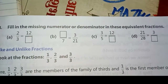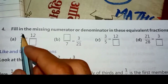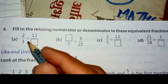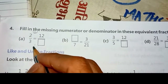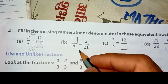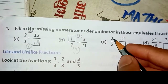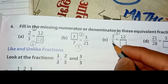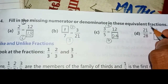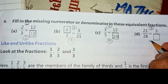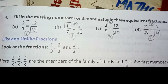Question 4: Fill in the missing number — numerator or denominator — in these equivalent fractions. Since they are stated to be equivalent, we find the multiplication or division factor and apply it. For example, if 2 was multiplied by 6 to get 12, we also multiply 3 by 6 to get 18. If 7×3 gives 21, then 1×3 gives 3. If 3×4 is 12, then 5×4 is 20. If 21 is divided by 7 to check, then 24 divided by 7 gives 4. In this way we find the missing digits.